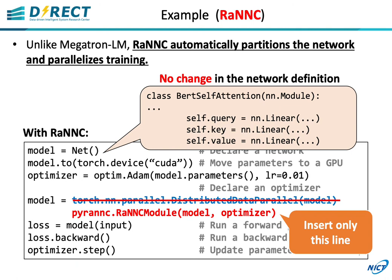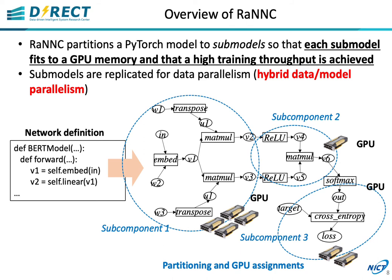RANK partitions the PyTorch model into submodels, so that each submodel fits into a GPU memory, and that a high training throughput is achieved. Submodels are replicated for data parallelism whenever possible.